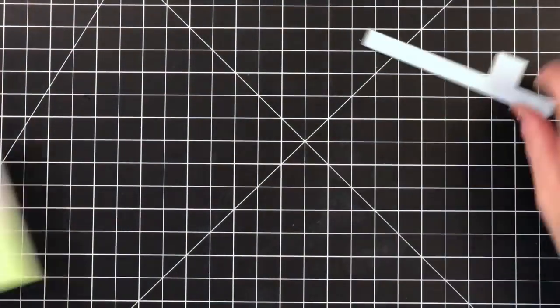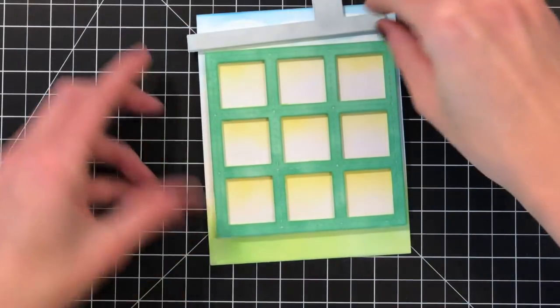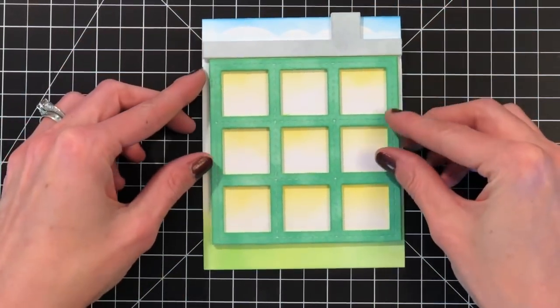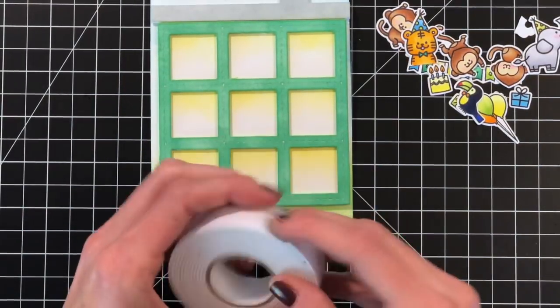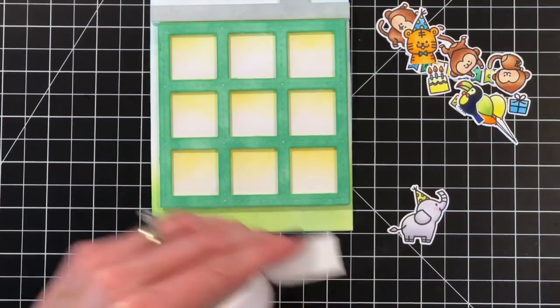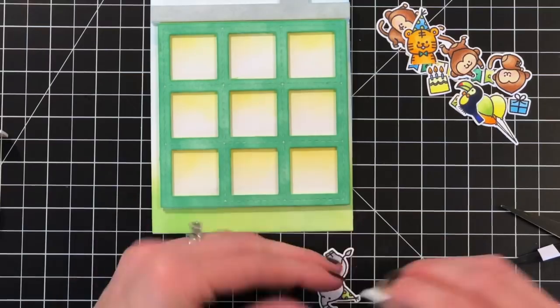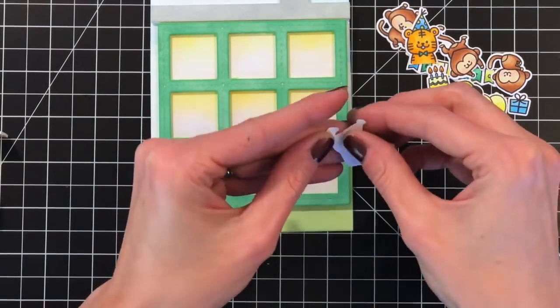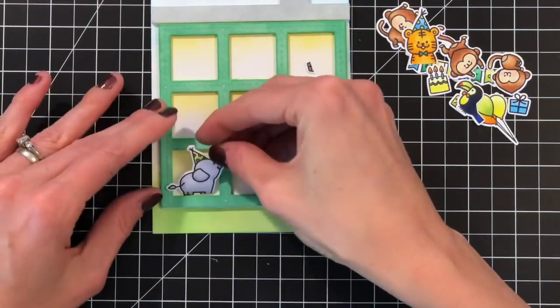And kind of let those dry while I work on and grab my card base or my card. So I'm just centering here, seeing where I want everything to go. And I'm going to grab all those images that I colored and some foam tape. And I'm going to cut small pieces of foam tape and add them behind almost all the images except for some of the balloons and the banner.